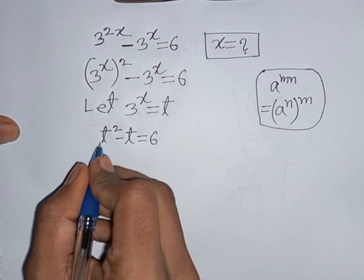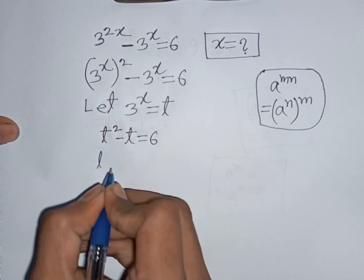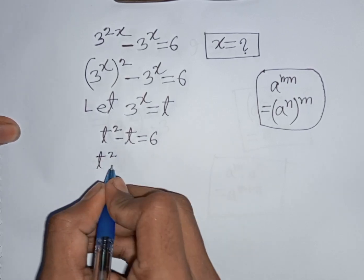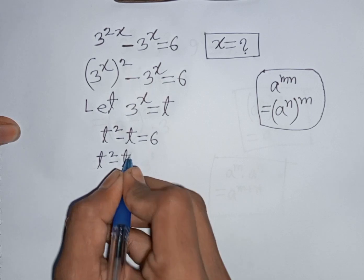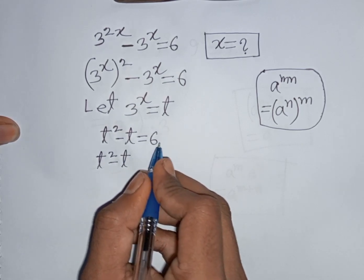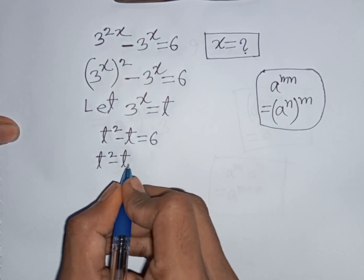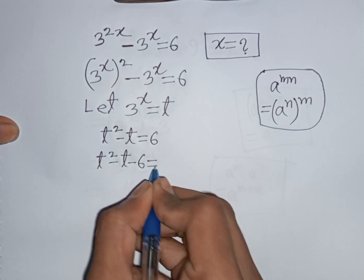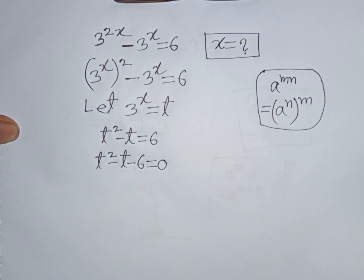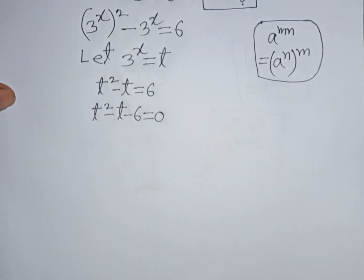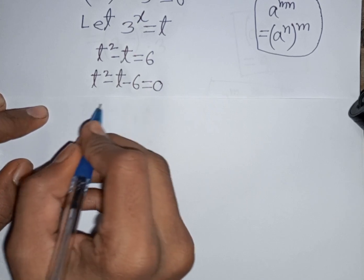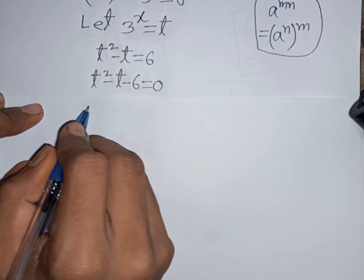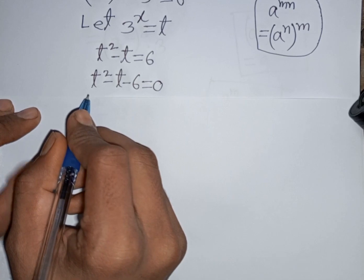Now we can write t square minus t, then take 6 to the left side, so this will be minus 6, giving t square minus t minus 6 is equal to 0. Here we can apply the quadratic formula or middle term factorization.